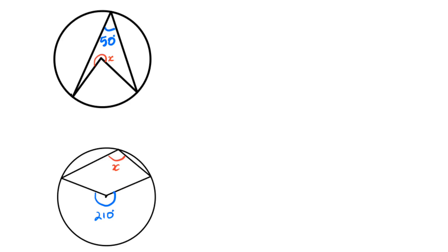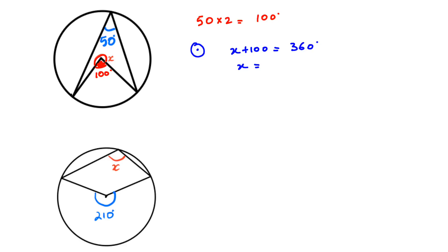In this question we can still see that we have the angle at the center and at the circumference from the same chord. If we times 50 by 2 we are going to get 100 degrees. This is 100 but we are not looking at this angle — we are looking at the angle above. The angle at a point equals 360, so we have x plus 100 equal to 360. Therefore x is equal to 360 minus 100, which is 260.